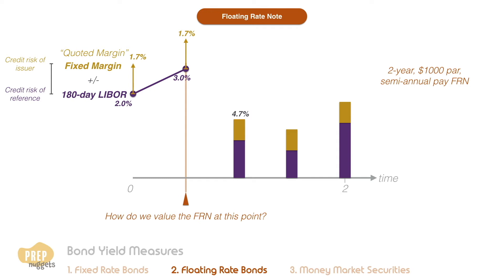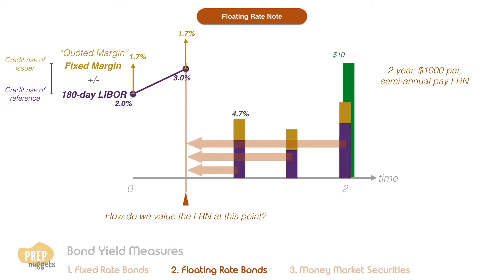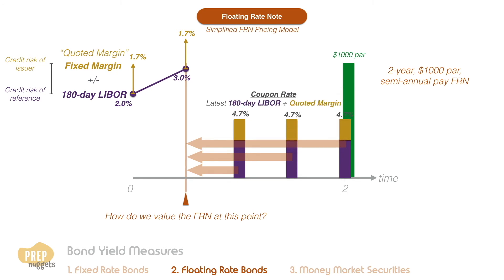Thus far, we have been using the method of discounting all future cash flows to the present and summing them up. However, in this case, we do not know the values of all the future cash flows yet. A simplified FRN pricing model is to fix all the future coupons at the most recent rate, which is the latest 180-day LIBOR plus the quoted margin. The same principle applies: sum up all the future cash flows discounted to the present. The discount rate to apply is the latest 180-day LIBOR rate plus the discount margin.